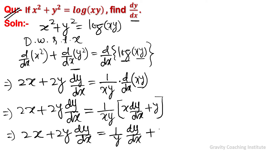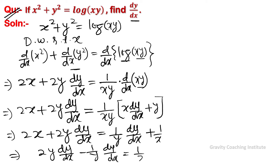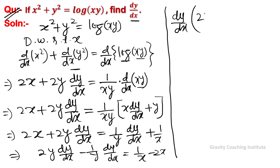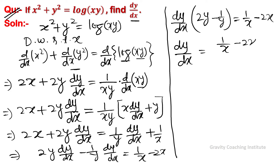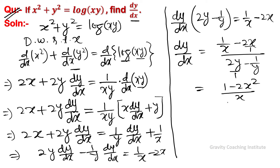So collecting dy/dx terms on the left side: dy/dx equal to 1 upon x minus 2x. Taking dy/dx common, dy/dx equal to (1 upon x minus 2x) upon (2y minus 1 upon y), which equals y times (1 minus 2x square upon x) upon (2y square minus 1 upon y).